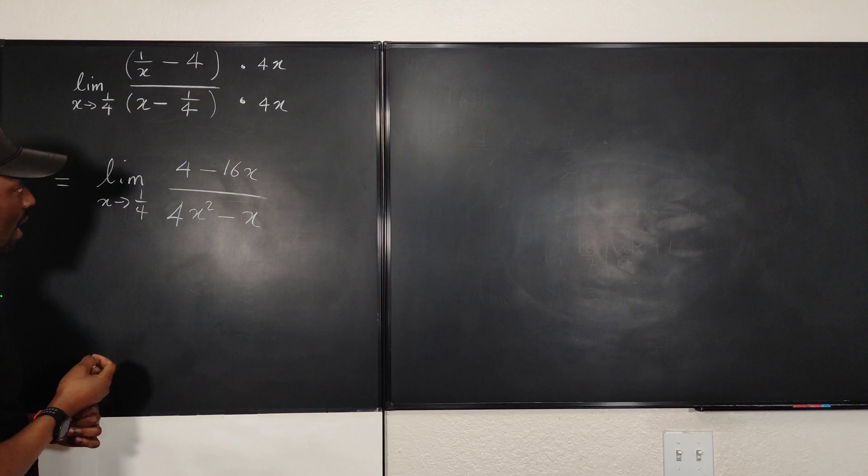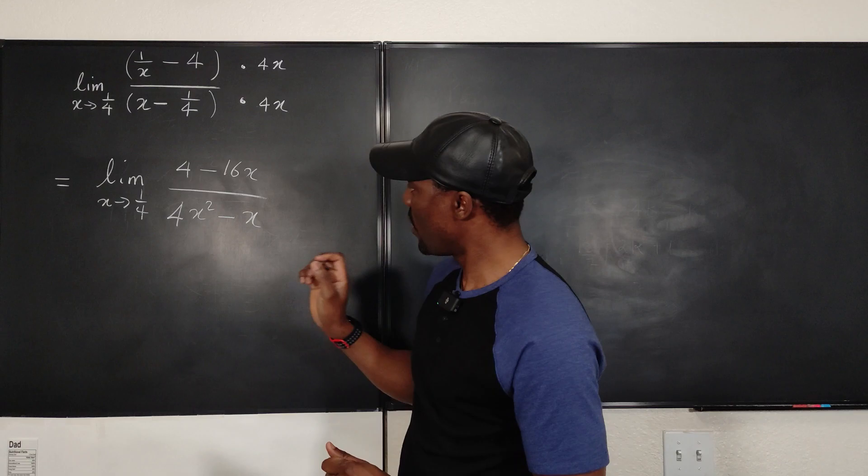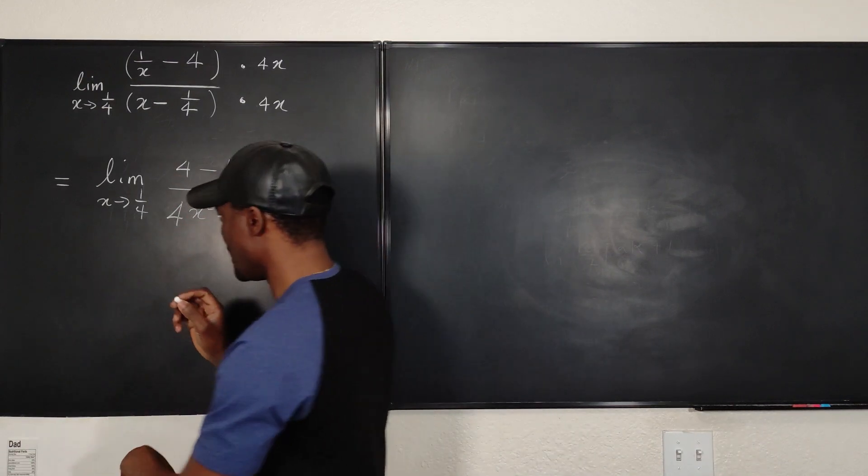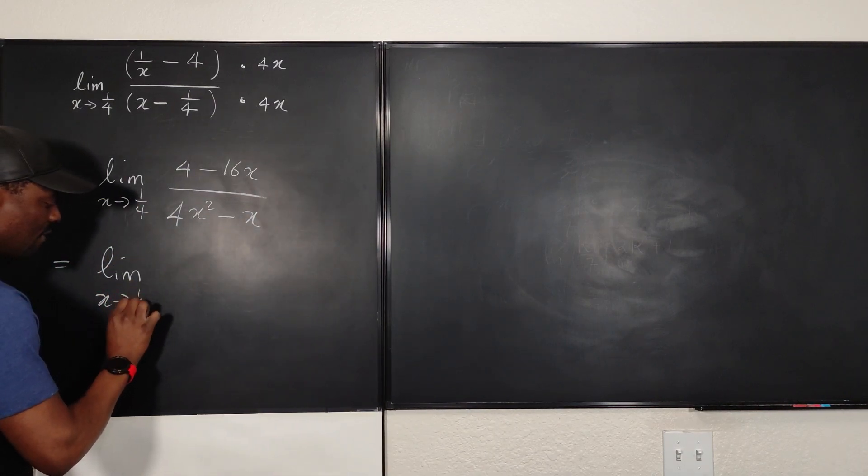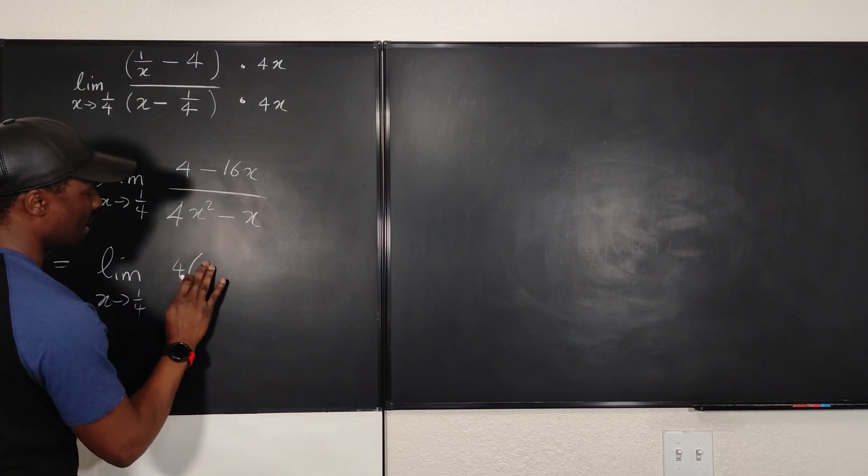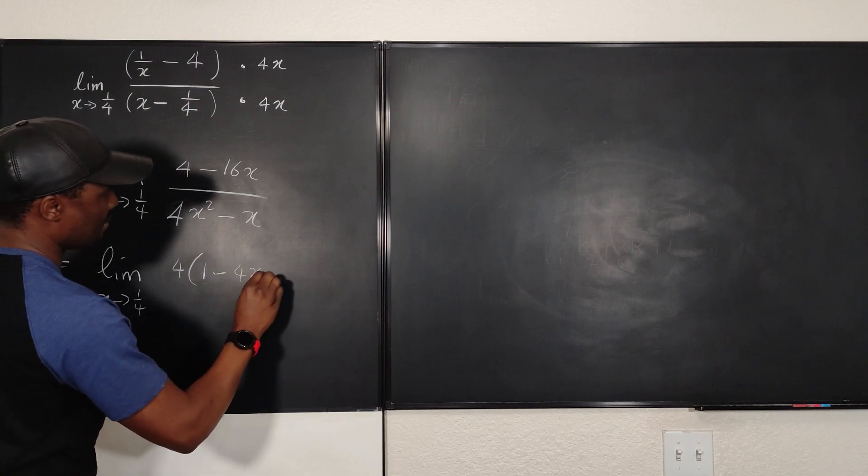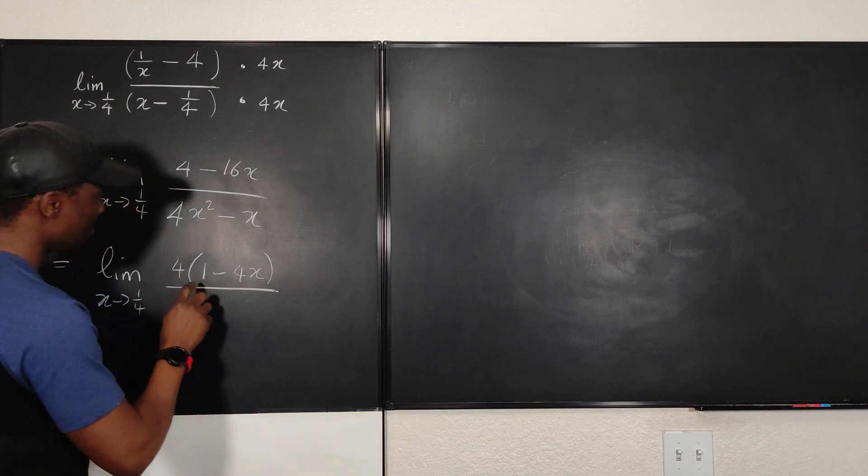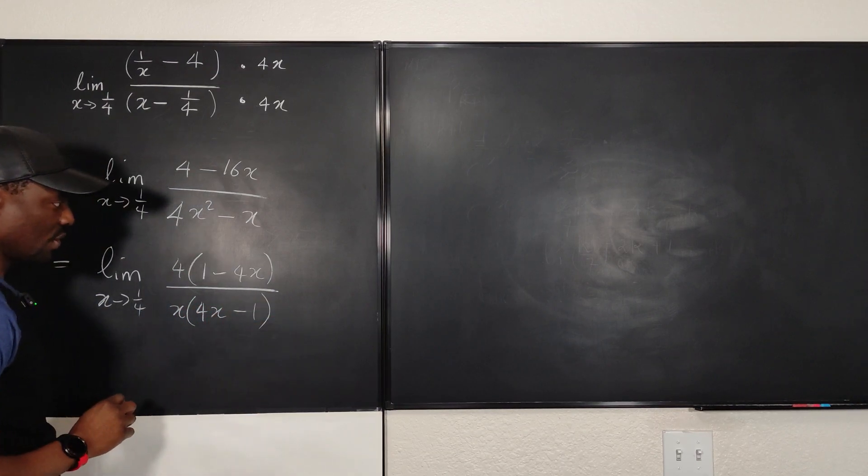Okay, so what comes out of this? Well, the good thing is you're able to factor. What can we factor out? What's common to this and this? 4. What's common to this and this? X. So what I have is equal to the limit as X goes to 1/4 of... This is going to be 4 times... Sorry, this is going to be 1 minus 4X. Interesting. And what do I have here? This is going to be X times 4X minus 1. So beautiful.